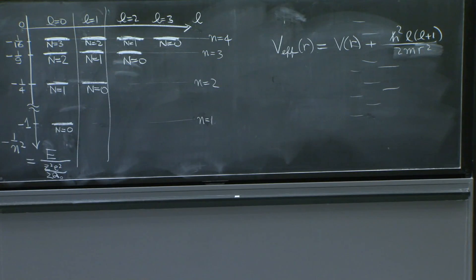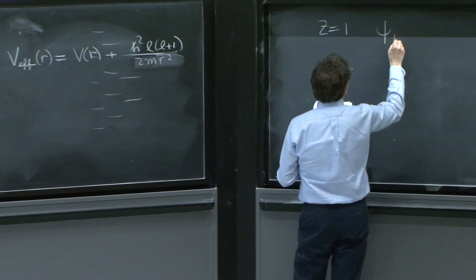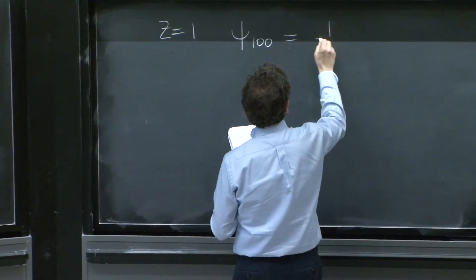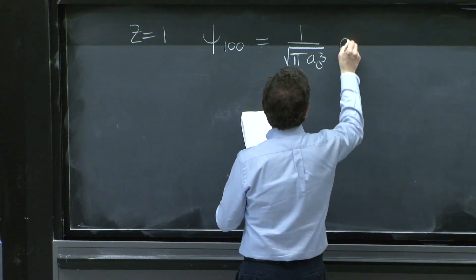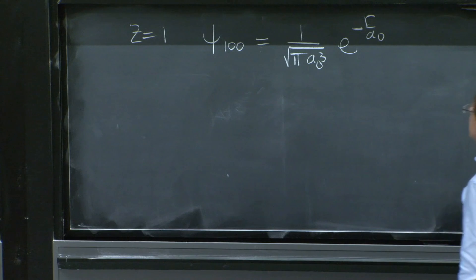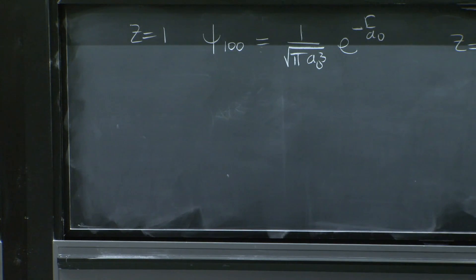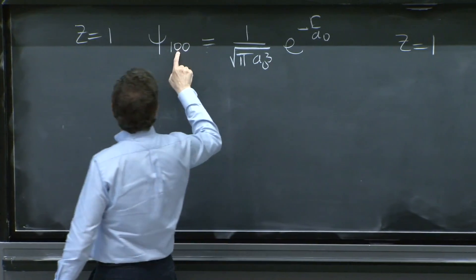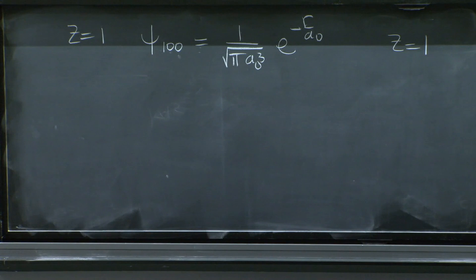A few more remarks to get your intuition working on the hydrogen atom, z equal 1. We write the wave function. This is the most famous wave function. 1 over square root of pi a0 cubed e to the minus r over a0. And this is for z equals 1, n equal 1, L equals 0, m equals 0. So the complete ground state.